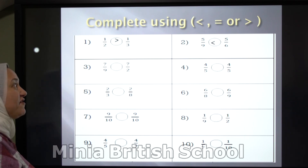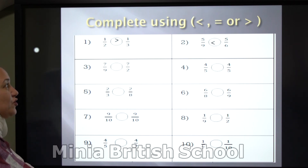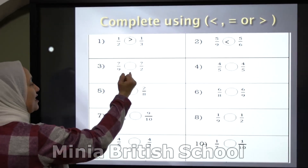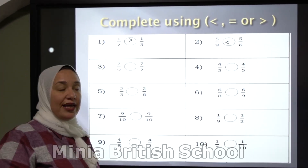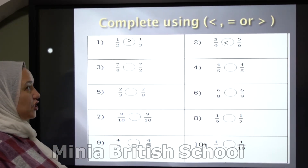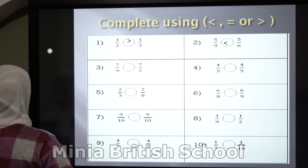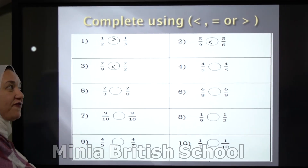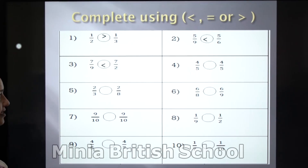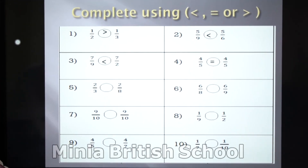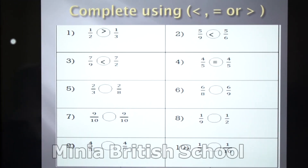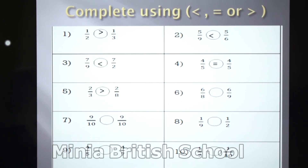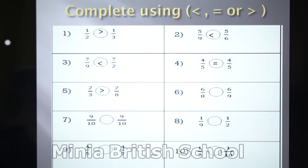Number 3: you have 7 over 9 and 7 over 2. The numerators are the same. In the denominators, 9 and 2 — which one is lower? Yes, it's 2, so 7 over 2 is the greater one. Number 4: 4 over 5 and 4 over 5 — yes, it's equal. Excellent! Grade 3: 2 over 3 and 2 over 8 — which one is bigger? Yes, 2 over 3 is greater than 2 over 8.